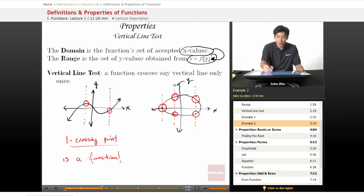As we can see from these two vertical line tests, greater than one crossing point means that the graph is not a function.